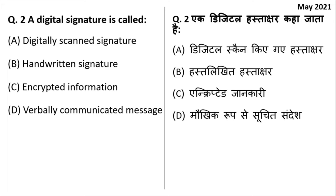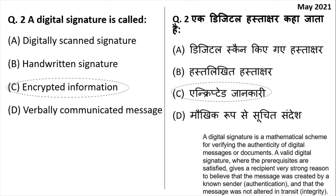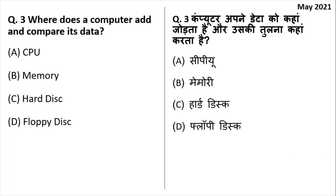A digital signature is called: a digitally scanned signature, handwritten signature, encrypted information, or verbally communicated message? A digital signature is encrypted information. When you want to send a digital document, you put a digital signature on it. When it is received by the receiver, if the digital signature is valid, it means the information inside has not been altered during transmission. The right answer is option C — encrypted information means nobody in the network is able to break or change it.